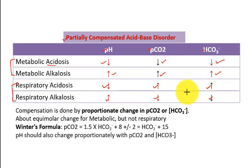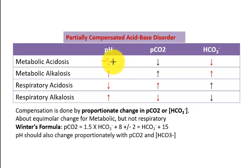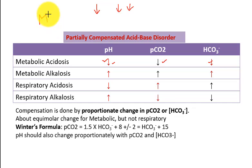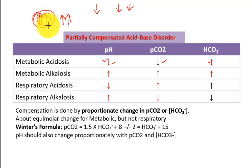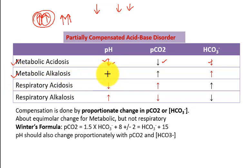How to remember this picture? It's very easy. In metabolic acidosis, the direction of all the arrows — pH, carbon dioxide, and bicarbonate — will be in the same direction. Remember M is like this: when you draw two arrows, it becomes an M shape. That is how you remember metabolic acidosis will have arrows directing downward. In metabolic alkalosis, all arrows will be pointing upward.